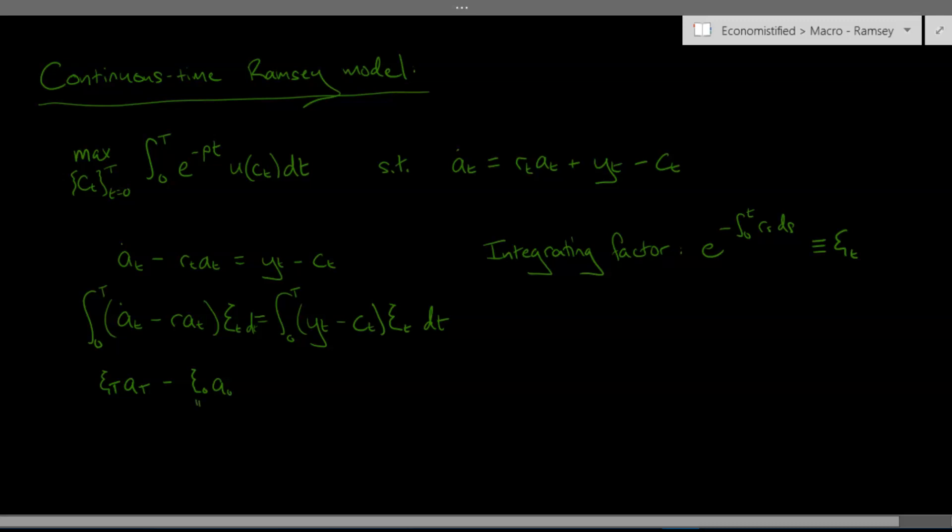so if we take this integral from zero to zero we're just going to get zero in the exponent here and so e to the error of zero is just one. So this ξ zero is just one. And on the right hand side we're just going to get this integral of non-labour income less consumption from zero to t multiplied by this integrating factor. So now remember I said I wanted to look at the limit of this problem as big T goes to infinity so the infinite horizon problem. And so let's take limits of this budget constraint now.